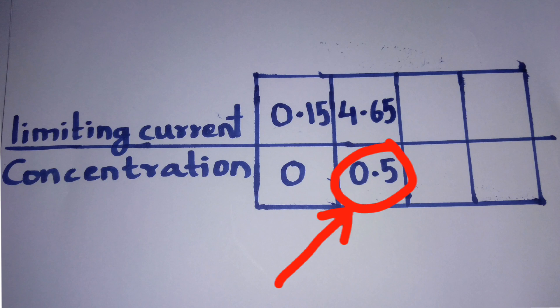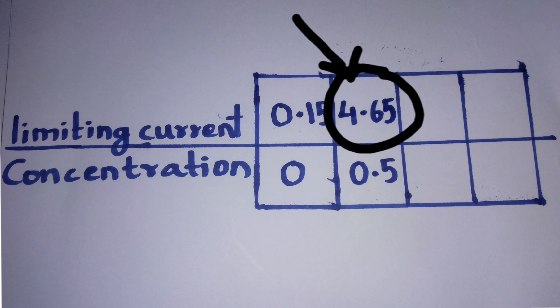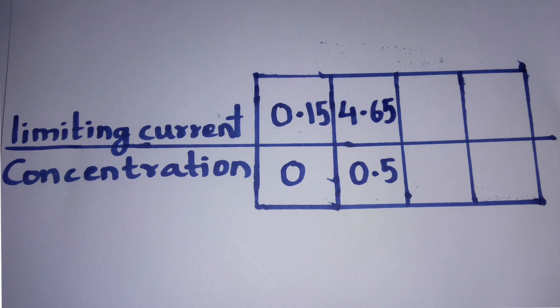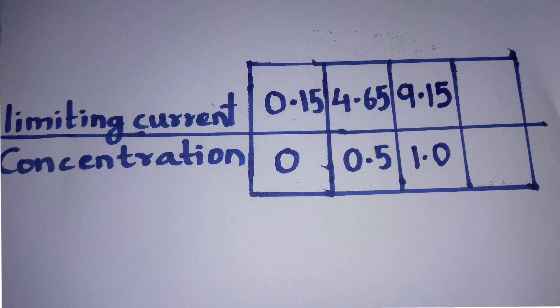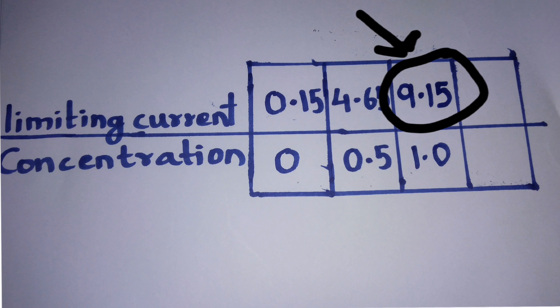When the concentration was 0.5 millimoles, the limiting current was 4.65. When the concentration of Pb²⁺ was 1 millimole, the limiting current was 9.15.